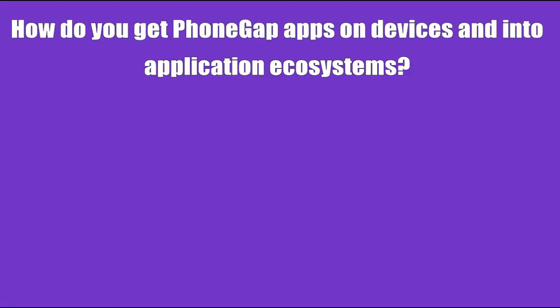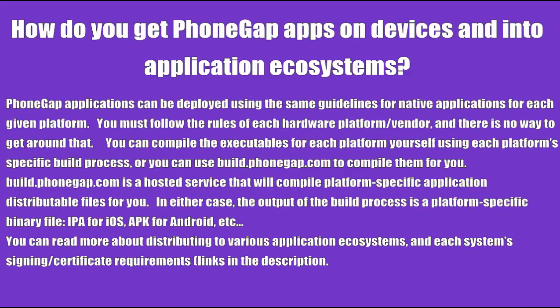How do you get FongApe apps on devices and into application ecosystems? FongApe applications can be deployed using the same guidelines for native applications for each given platform. You must follow the rules of each hardware platform vendor, and there is no way to get around that. You can compile the executables for each platform yourself using each platform's specific build process, or you can use build.fongape.com to compile them for you. Build.fongape.com is a hosted service that will compile platform-specific application distributable files for you. The output of the build process is a platform-specific binary file — IPA for iOS, APK for Android, etc.